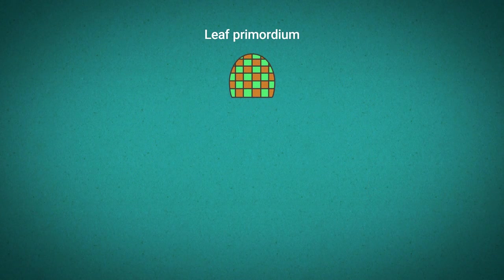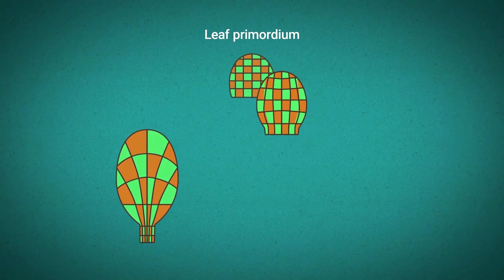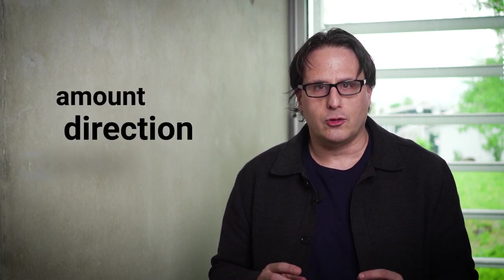It is difficult to understand how these different shapes are produced as many cell growth patterns can produce similar final forms. To understand how diverse leaf shapes emerge we need to know how different genes control the amount, direction and duration of cellular growth.